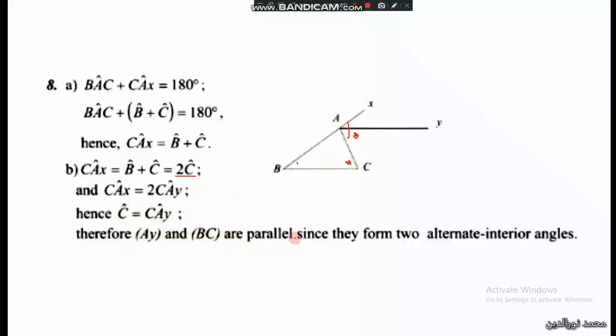Then CAY and BC are parallel since they form two alternate interior angles. So angle CAX equals B plus C, angle CAY equals C, then CAY and BC are parallel.